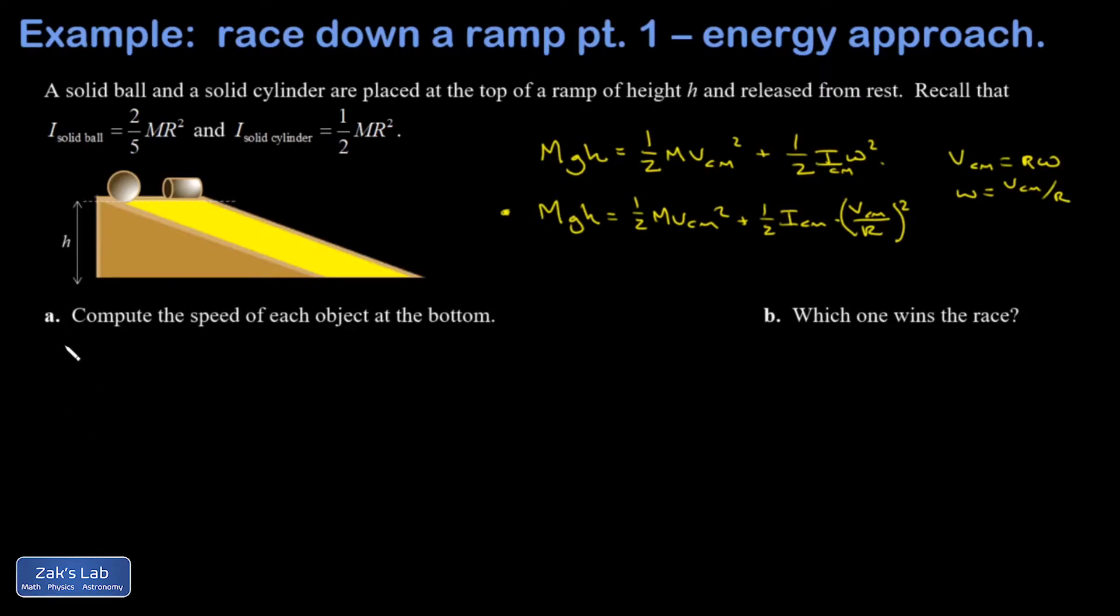Let's look at the speed for the ball. I have MGH equals one half MV center of mass squared plus one half times two fifths MR squared times V center of mass squared over R squared. You should notice the radius of that ball is irrelevant to how fast it's going by the time it gets to the bottom. I didn't have to specify a radius to compare their final speeds.